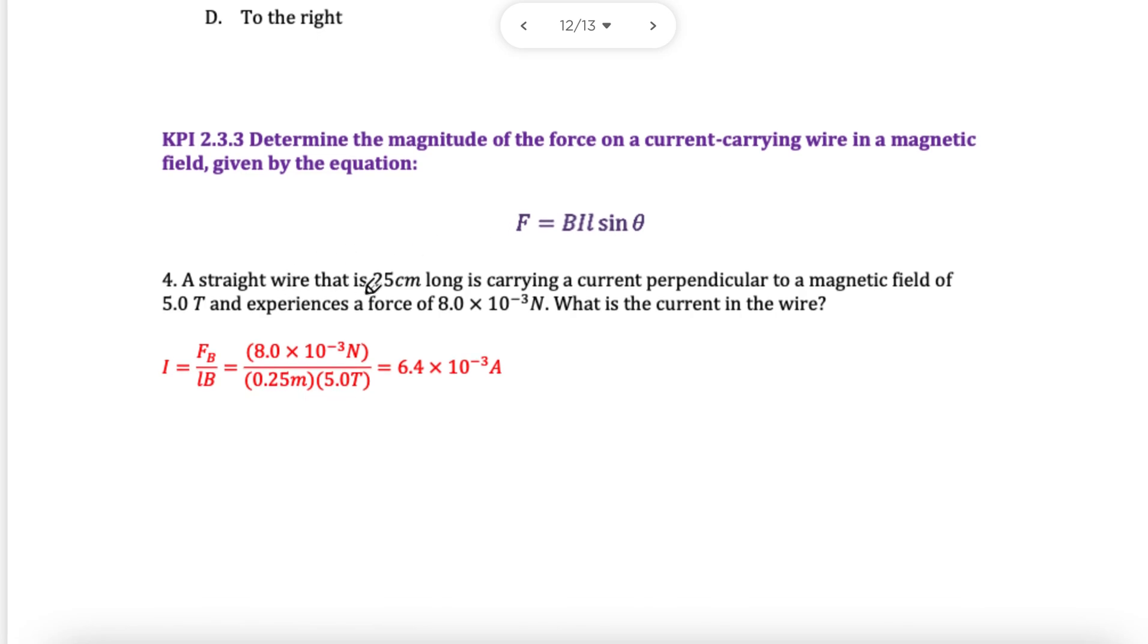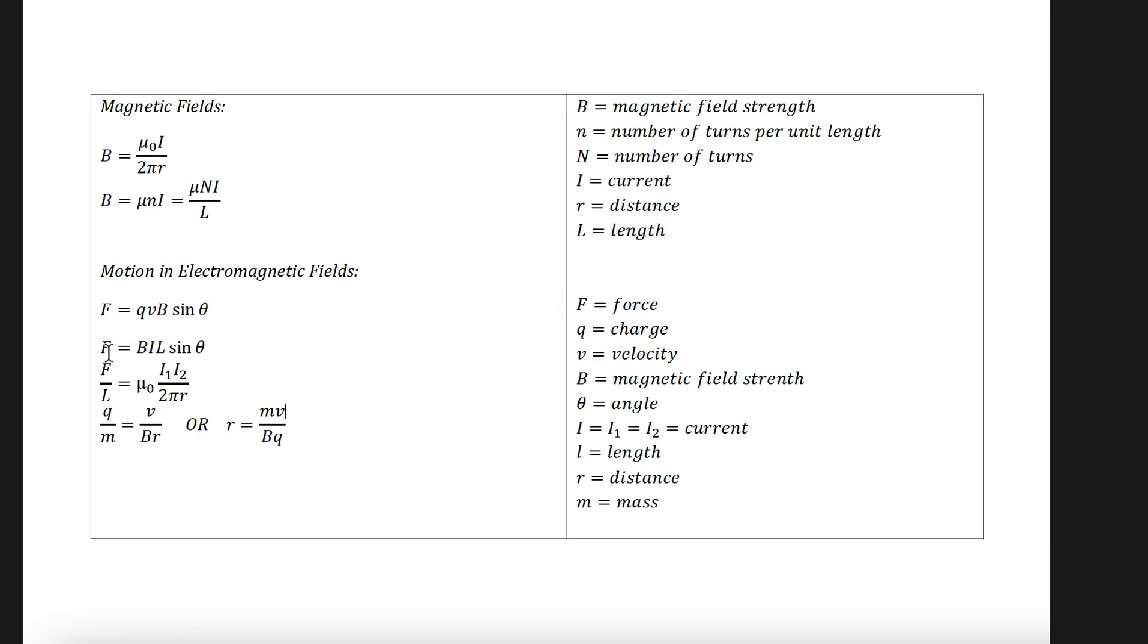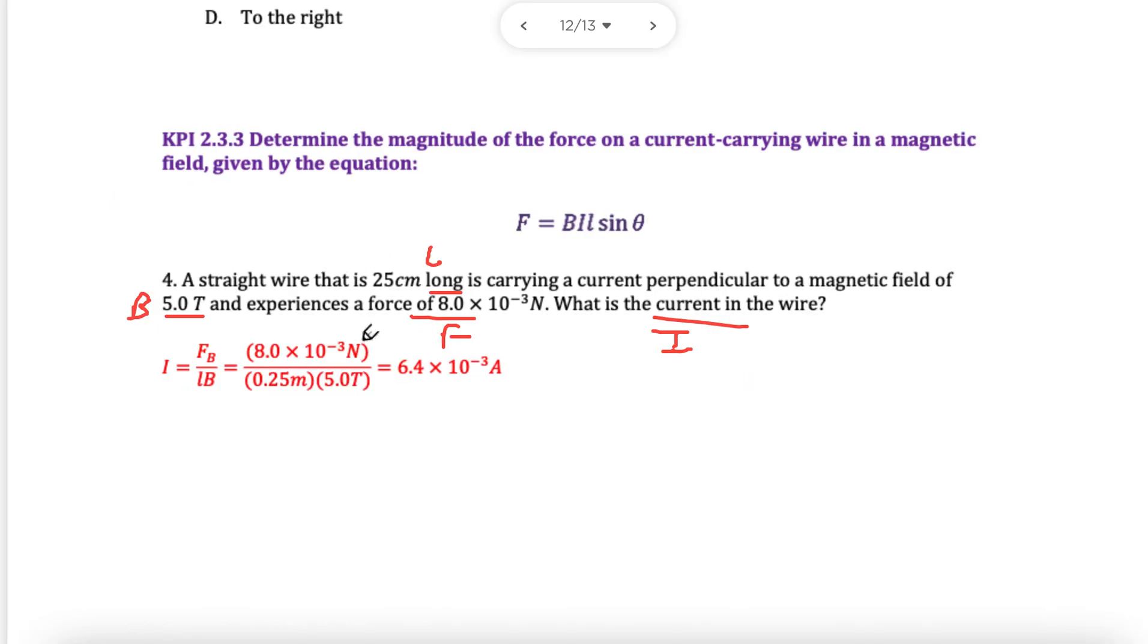Now we have a straight wire, you have a length, we have a field, we have a force, we need a current. So length, field, force, current. F, B, L, I. Let's check the formula sheet. Obviously it's given to us here, but you won't get it in the exam. Clearly, we're looking at F, B, L, I. This looks like our relationship. If you have no idea what you're doing, at least try to figure out what formula you can use. You'll get two marks just for writing the formula. And then you put some numbers in, you might get some marks. Don't forget the unit, you will get a mark just for writing the unit. Please don't leave anything blank.